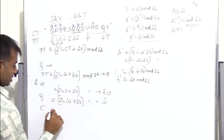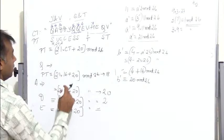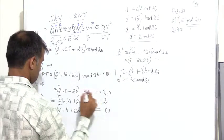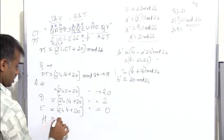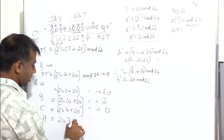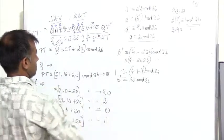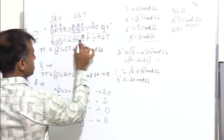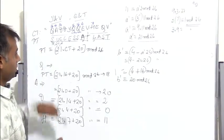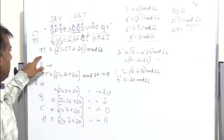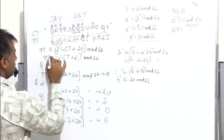For e (value 4): plaintext = 21 × 4 + 20 mod 26 = 0, which is a. For h (value 7): plaintext = 21 × 7 + 20 mod 26 = 11, which is n. So the full plaintext decodes to 'success at last'. Given the ciphertext, we retrieved the plaintext using the equation: plaintext = a' × ciphertext + b' in mod 26.